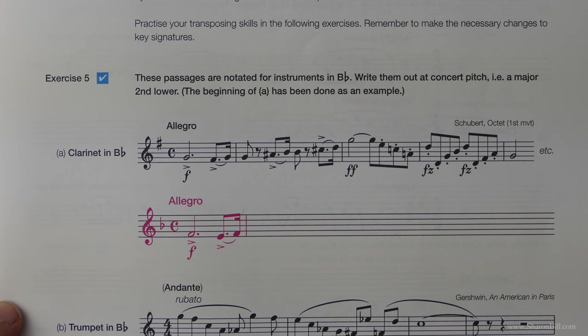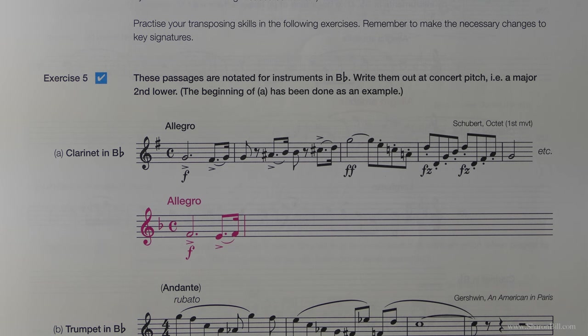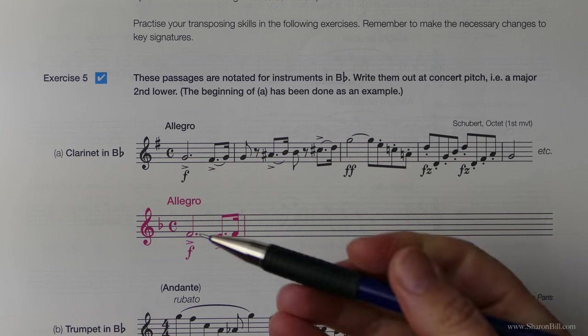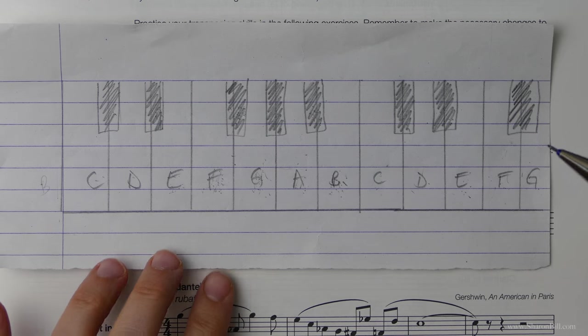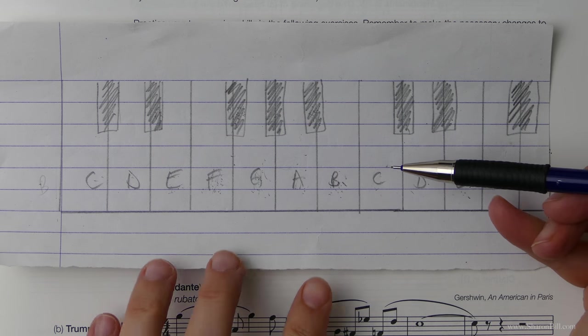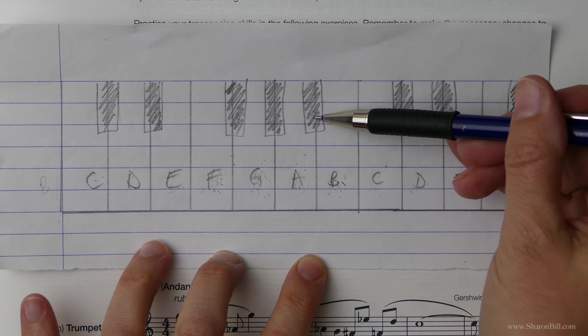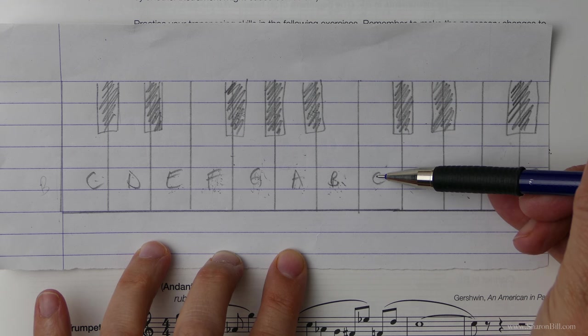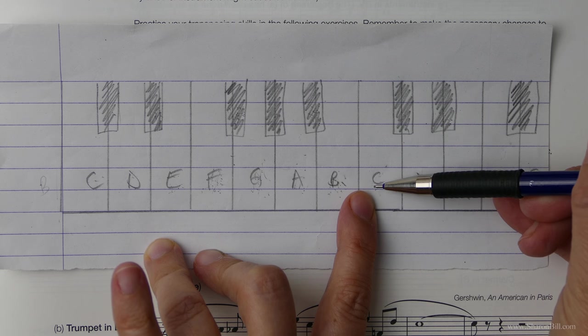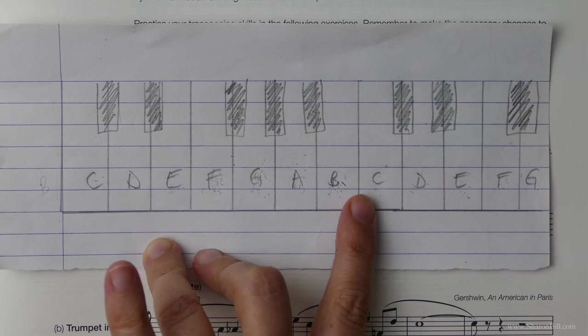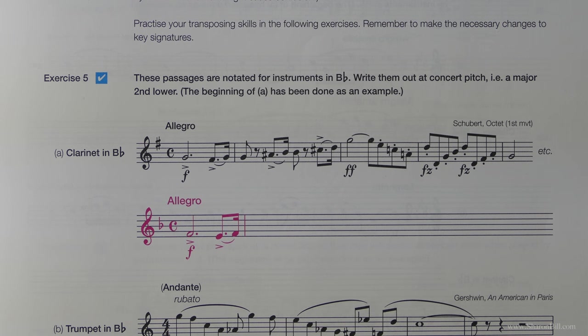So now we're going to be transposing a major second lower. The reason you would do that for practical purposes is that some instruments transpose. For example, a clarinet in B flat: when a clarinet or trumpet in B flat plays the note C, what it actually sounds like is B flat. And so in order for them to sound a C, they would have to play note D, which sounds a major second lower and that would sound like a C. And so that's why we have all these transposition challenges for all of the different instruments that transpose in different intervals.